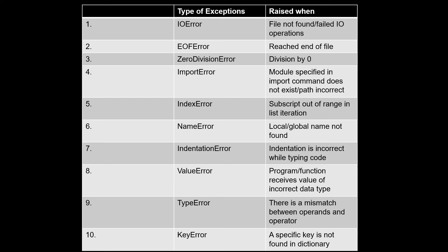IndexError is an important one — it occurs when you try to access a list with an index that does not exist, i.e., going out of range. For example, if you have a list of five numbers, the valid indices are l[0] to l[4]. There is no element l[5], so accessing l[5] raises an IndexError — essentially a subscript out of range in the list iteration.